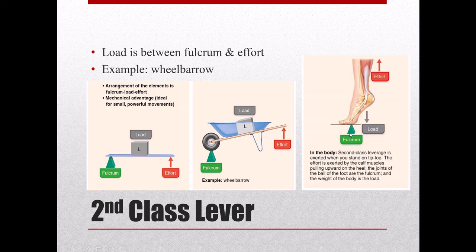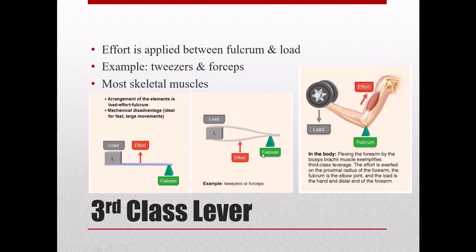The most common type of lever in the body is the third-class lever, under which most of our muscles operate. Here, the effort is applied between the load and the fulcrum. Tweezers or forceps are a good example — you apply effort in the middle to pick up and move a load. These muscles tend to be at a mechanical disadvantage, producing really large, fast movements. A good body example is the biceps brachii: the fulcrum is the elbow, the biceps contracting is the effort applied close to the joint, and the load is the weight being lifted at the end of the forearm.